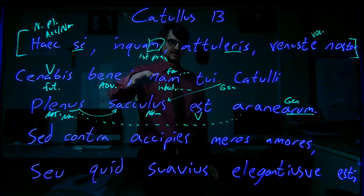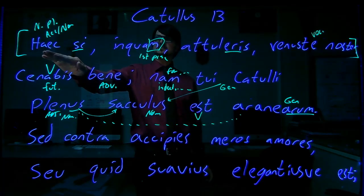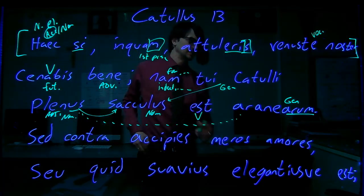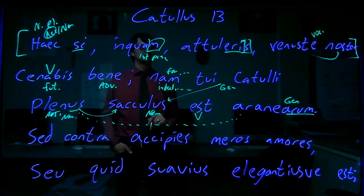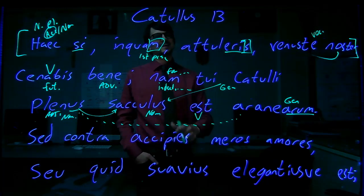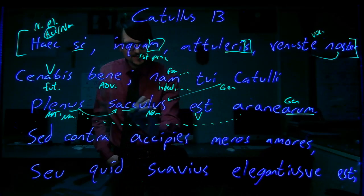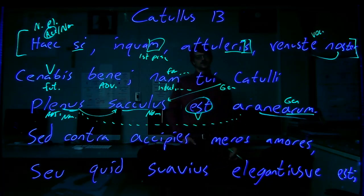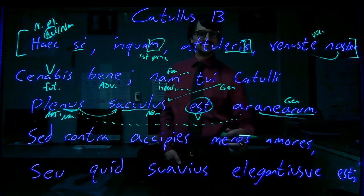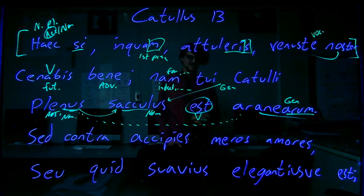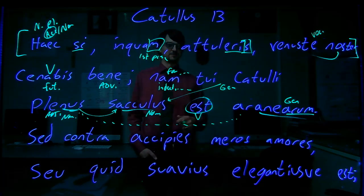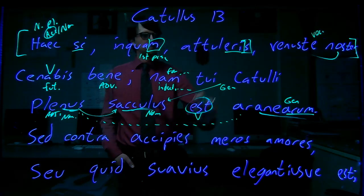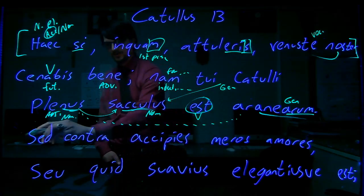And that also gives our genitive something to modify. So if you were to bring these things, I say, my dear man, cenabis bene, you will dine well for sure. Because if you bring the whole meal, I mean, who wouldn't dine well, right? For indeed, why isn't Catullus paying anything? Well, the purse of your Catullus, your dear Catullus, est, is full of spiderwebs. Aranea are spiderwebs. And you can think of, like, the modern world, like, in almost a cartoony sense. If you open something that hasn't been opened for years, you'll see a little cobweb up in the corner or something. Old spiderweb will be in there. Because spiders like to find the empty spaces and make their webs there. And so you can see Catullus is out of money. His purse is full of cobwebs, if you will. It's kind of funny.